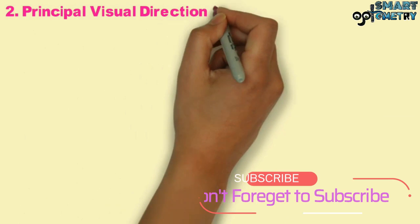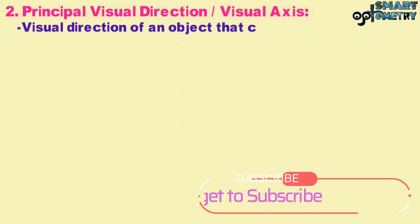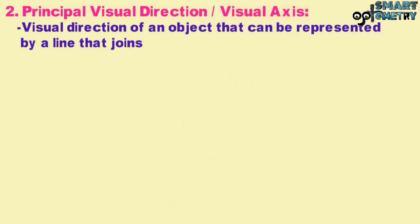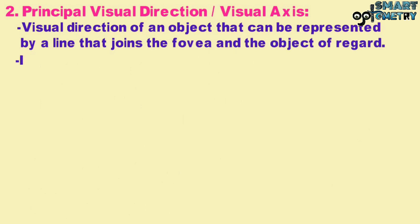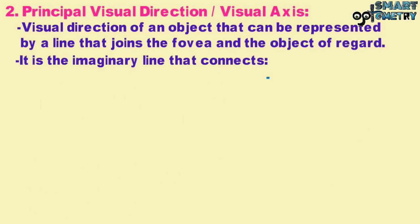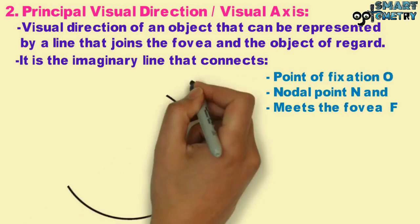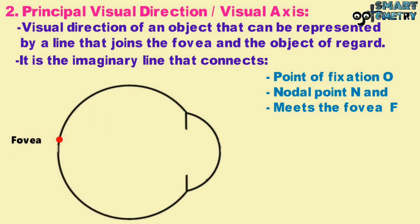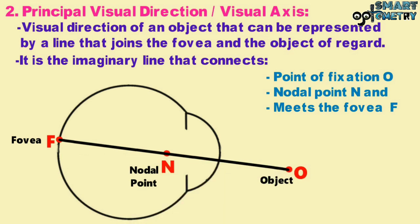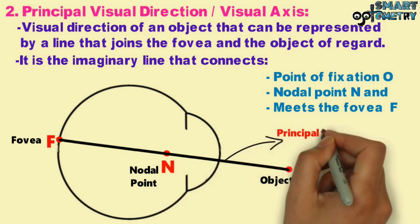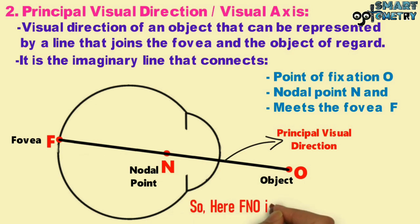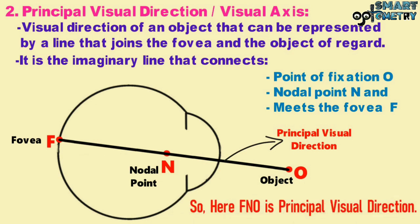Second, the Principal Visual Direction, or Visual Axis, is the visual direction of an object represented by a line that joins the fovea and the object of regard. It is the imaginary line that connects the point of fixation O while passing through the nodal point N and meets the fovea at point F. In the diagram, the fovea is at F, the nodal point at N, and the object of regard at O. The line F-O is the principal visual direction.